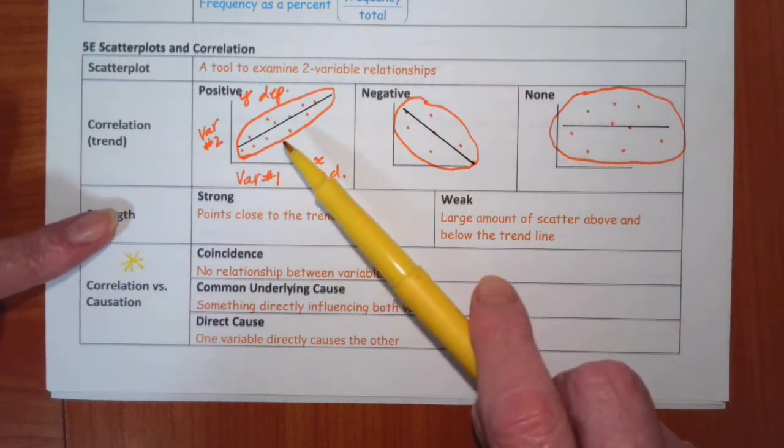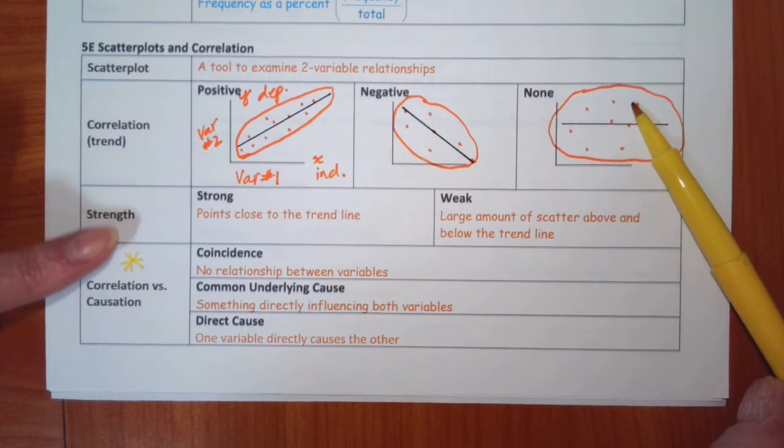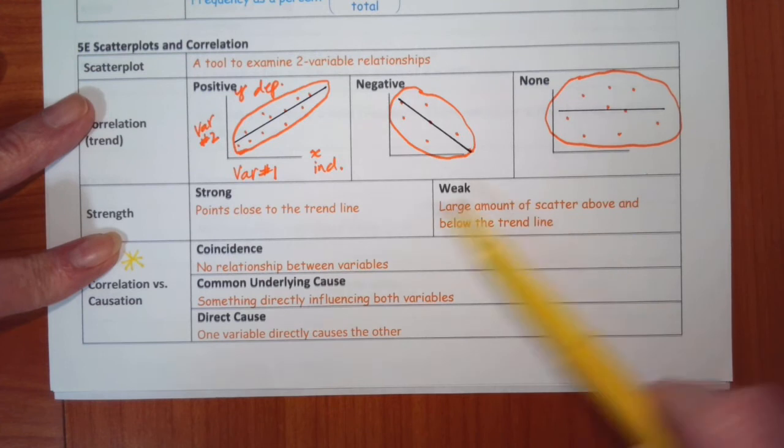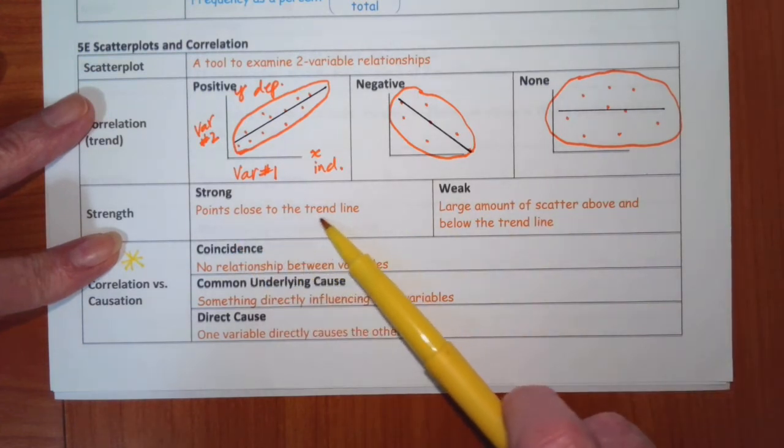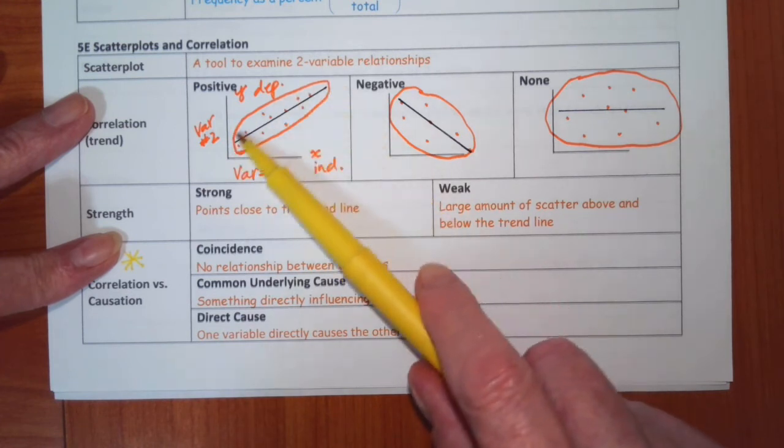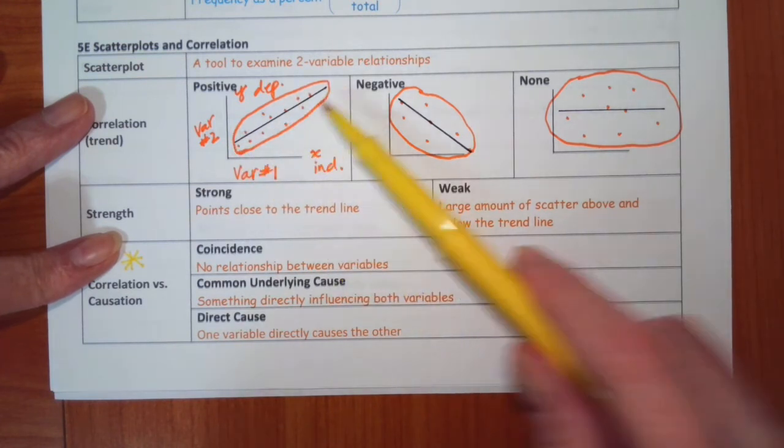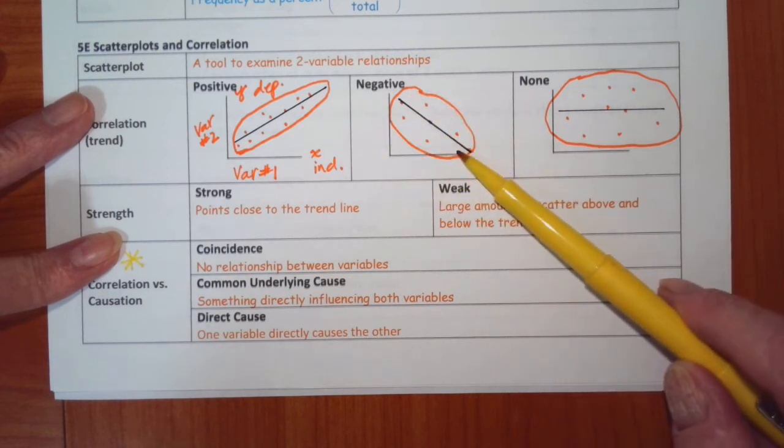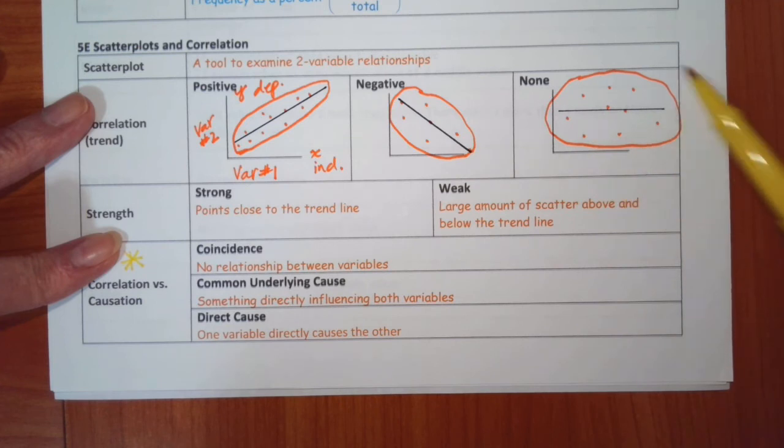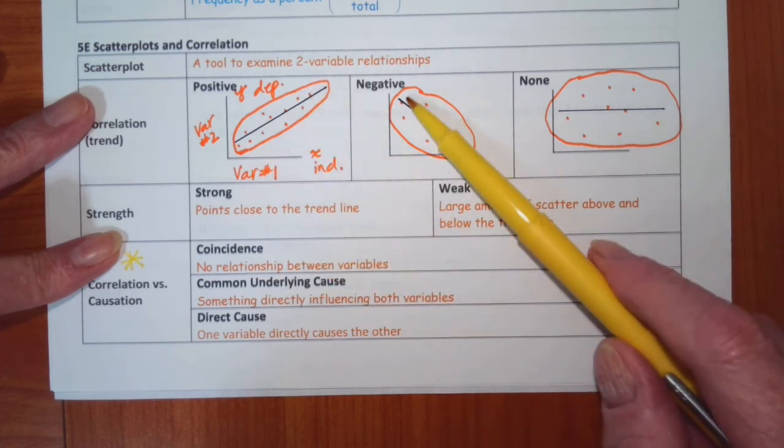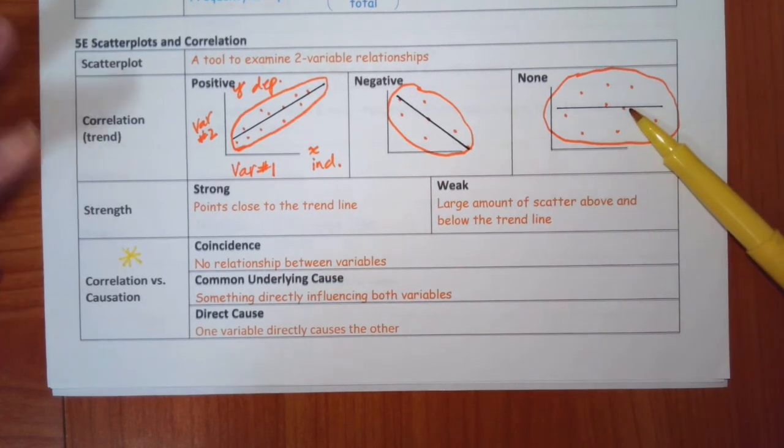So in addition to positive, negative, or none, you need to look at whether there is a strong or a weak correlation. Strong means that the points are close to the trend line. So you can see here if you drew an oval around them, it would be long and skinny. Here, your oval is a little bit fatter. And here, it's just all over the place. So this would be characterized as positive strong, this would be negative weak, and this would be none.